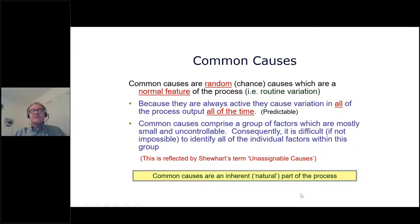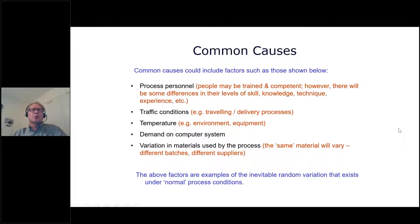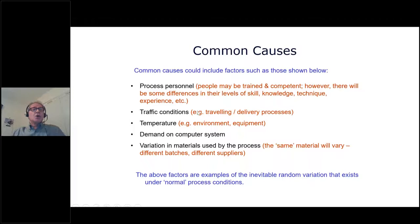Common causes are an inherent natural part of a process. Examples include process personnel — people may be trained and competent yet inevitably carry out tasks slightly differently based on skill and technique. Traffic conditions relevant to travelling or delivery processes. Temperature affecting the work environment or equipment. Demand on the computer system — sometimes it responds quickly, other times more slowly. And variation in materials used by the process — the same material will vary across different batches and different suppliers. These are examples of the inevitable variation that exists under normal process conditions.